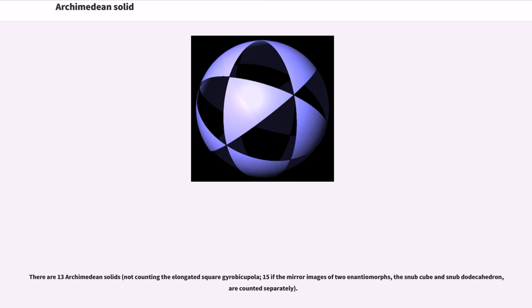There are thirteen Archimedean solids, not counting the elongated square gyrobicupola, fifteen if the mirror images of two enantiomorphs, the snub cube and snub dodecahedron, are counted separately.